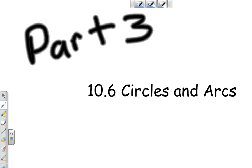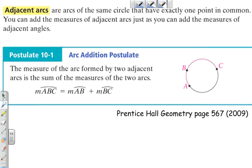Our discussion today is going to be centered around the Arc Addition Postulate. The Arc Addition Postulate is very similar to the Segment Addition Postulate and the Angle Addition Postulate. Adjacent arcs are arcs of the same circle that have exactly one point in common. You can add the measures of adjacent arcs just as you can add the measures of adjacent angles.